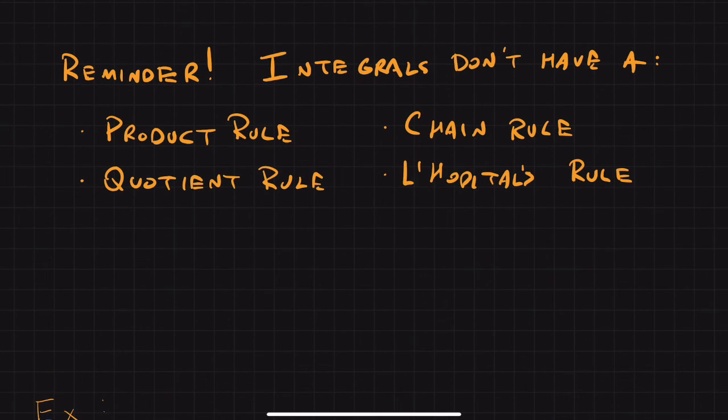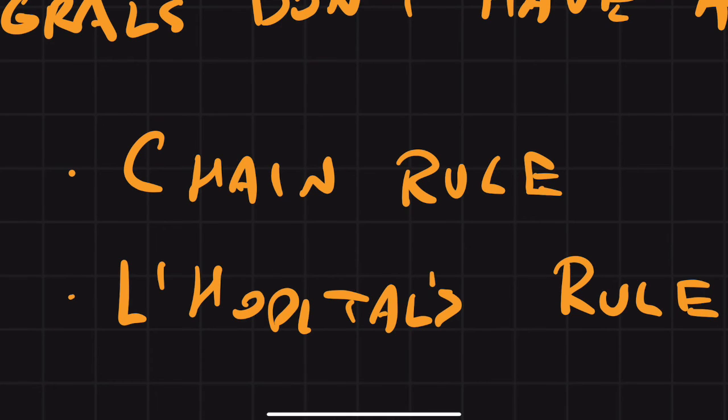And there's no L'Hopital's rule. There is a simplified version of the chain rule, which we could call the reverse chain rule. But that only works for very special cases. When we get to the unit of u substitution, we'll learn how to undo some chain rule problems.